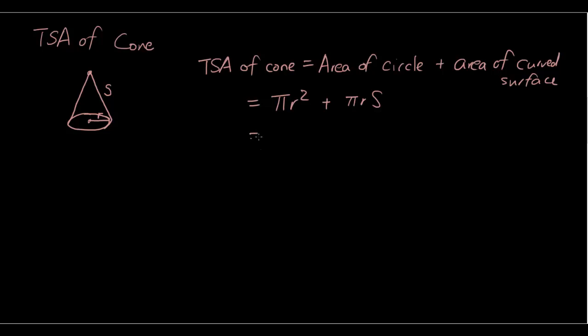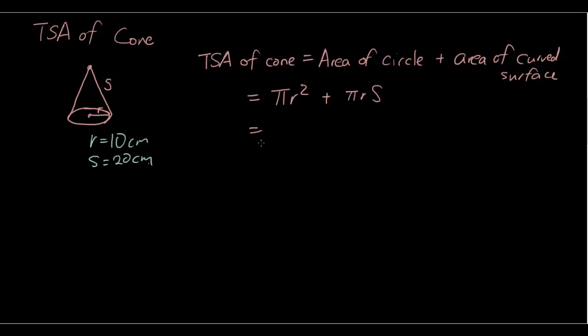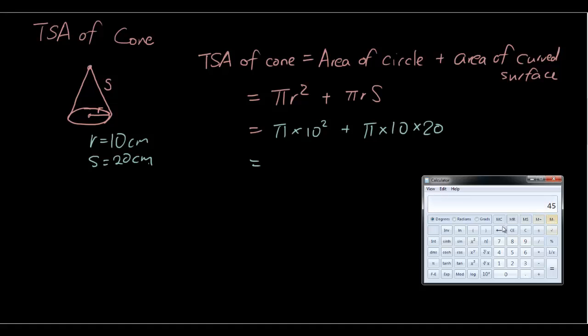So basically, if the radius was, let's say the radius equals 10 centimeters and the slant height is 20 centimeters, so the total surface area of the cone would just be π times 10 squared plus π times 10 times 20. And putting all that in the calculator, I'll show you how to type this one in.